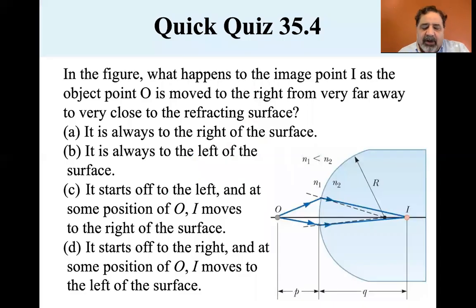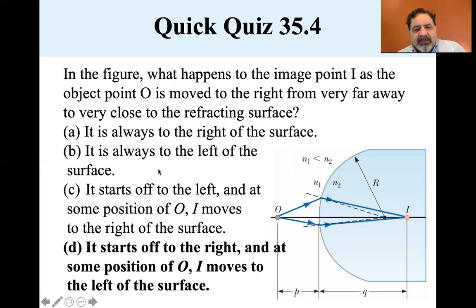So they start off right with a quiz. In the figure, what happens to the image point I as the object O is moved to the right from very far away to very close to the refracting surface? Now, I had a hard time with this understanding it intuitively. I mean, I understand, but I'm just going to give you the answers. It's D. It starts off to the right, and at some position of O, I moves to the left of the surface. And to me, that's not intuitive.